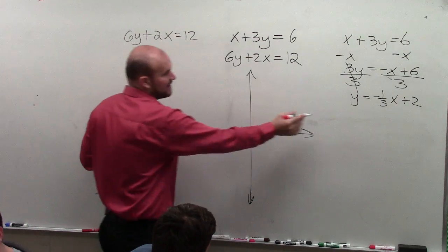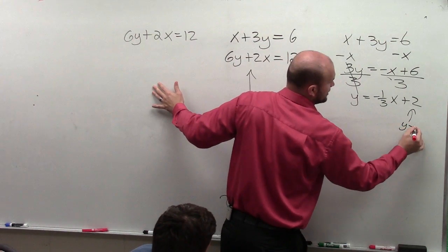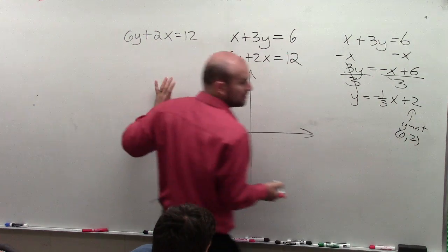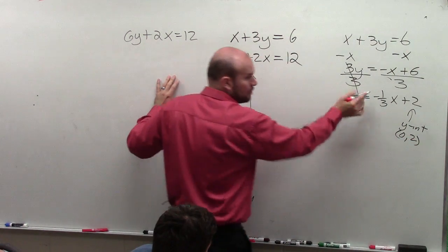So now we go ahead and graph this. So I have here, again, is my y-intercept, which remember, y-intercept is a coordinate point, which is 0, 2. And then my slope is negative 1 third.